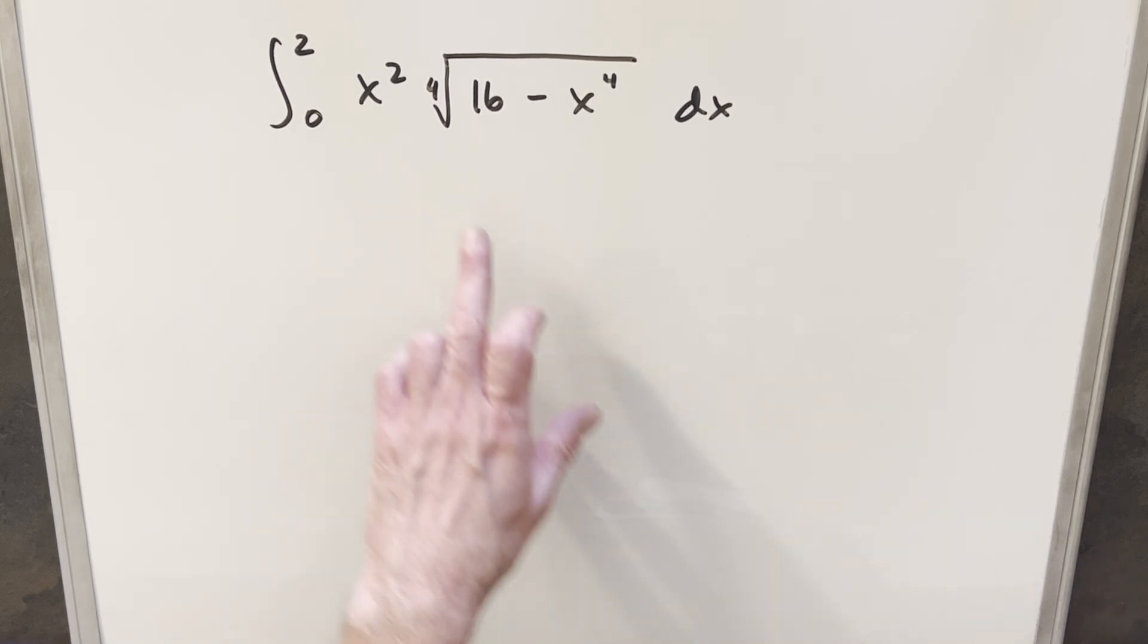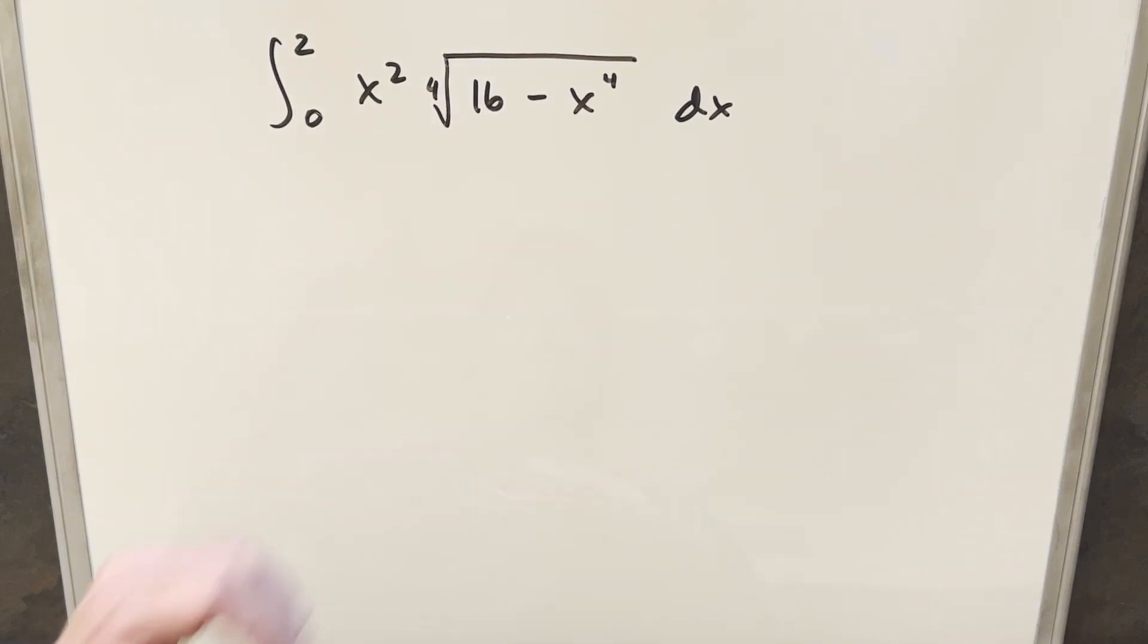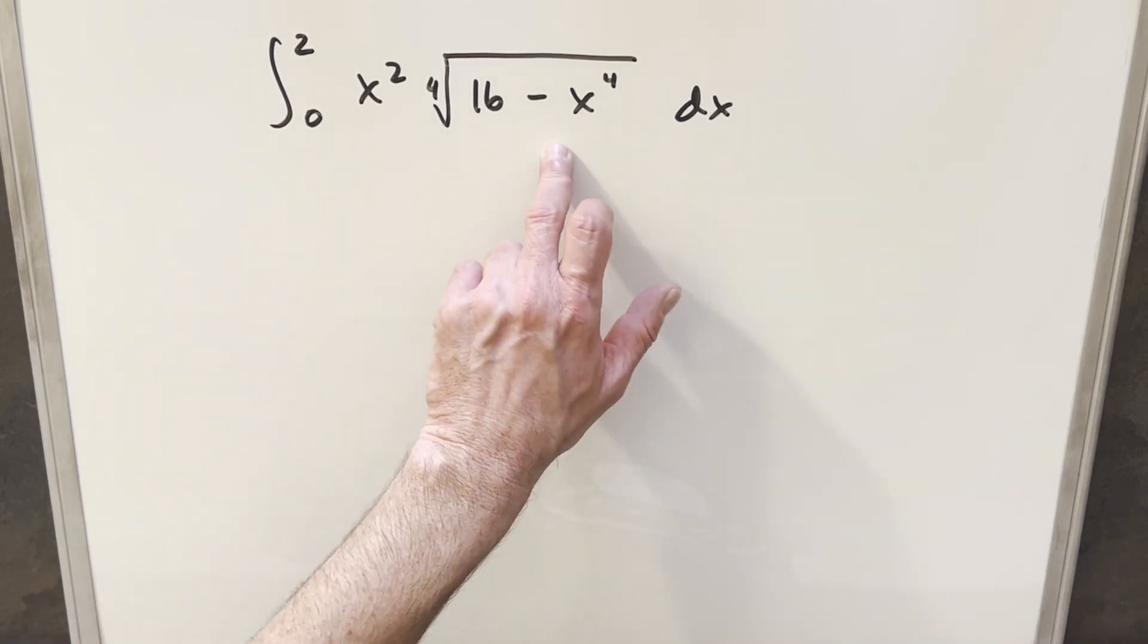Okay, the first thing I notice here is that inside the fourth root, this is to the fourth, 16 can be written as 2 to the fourth. I did this earlier with a u substitution and that was okay, but also notice this is in pretty good shape for a trig substitution, just kind of looking at what we have here.